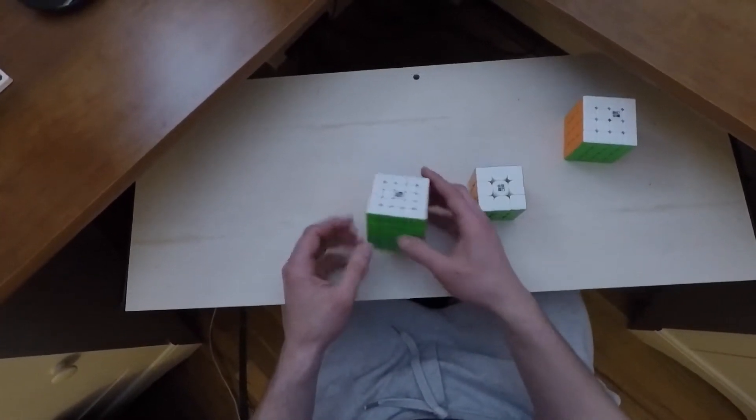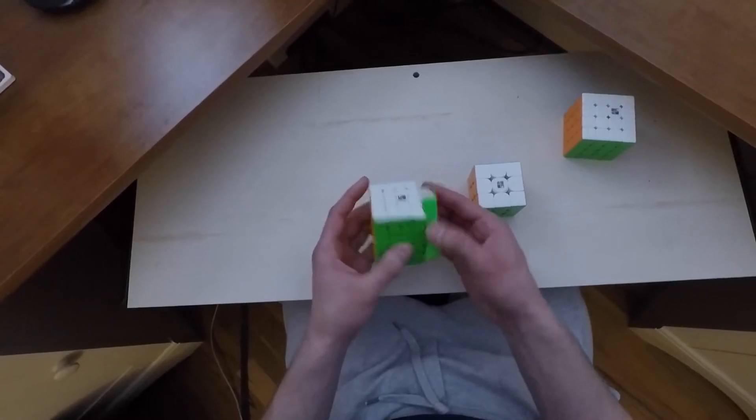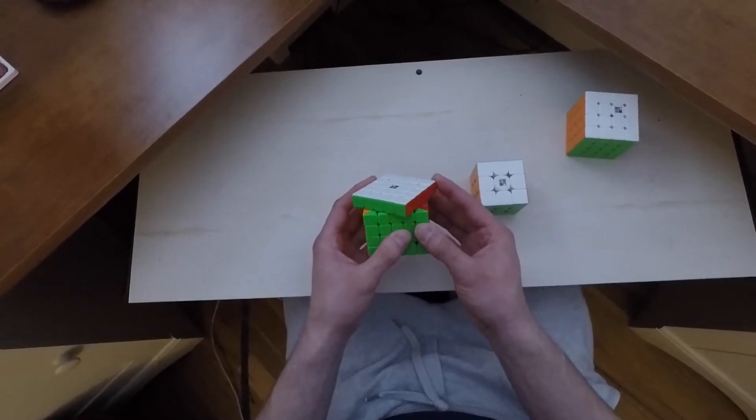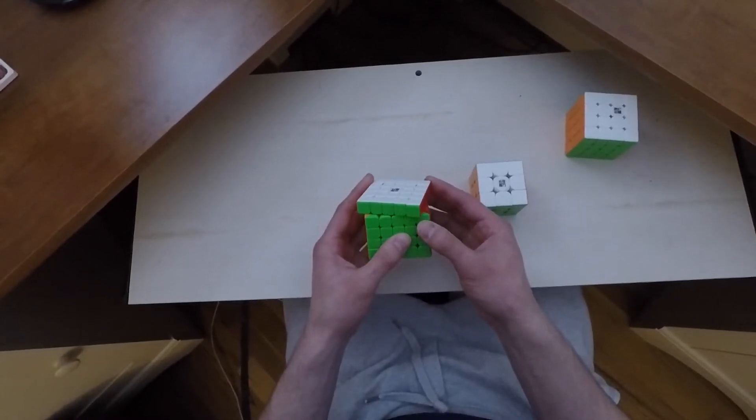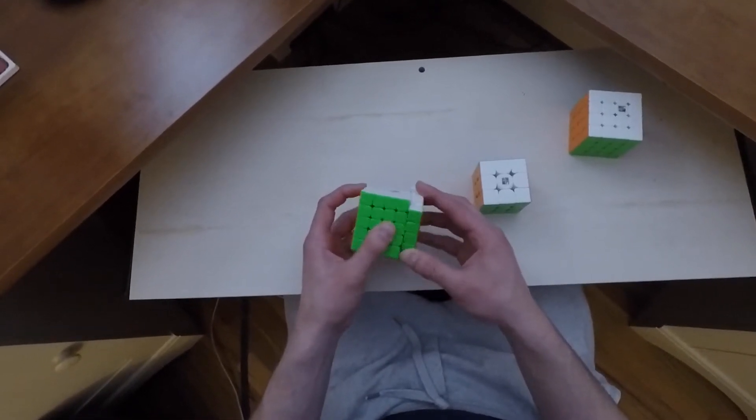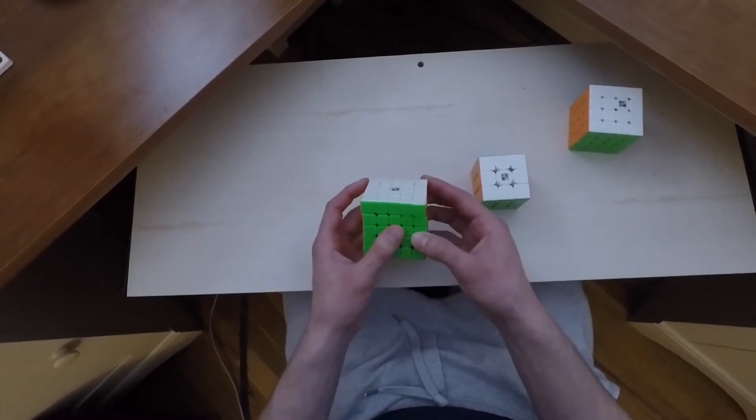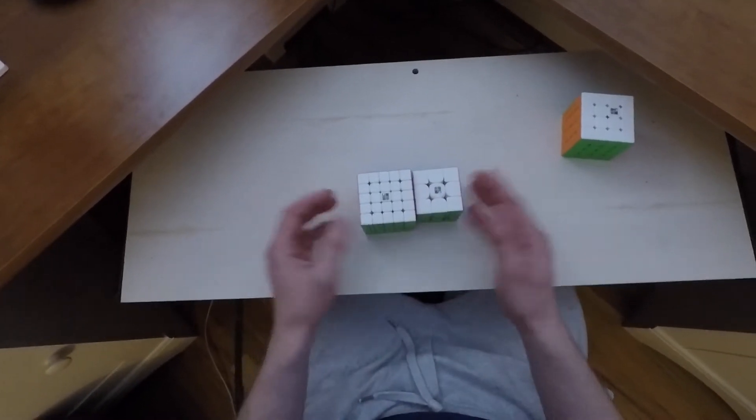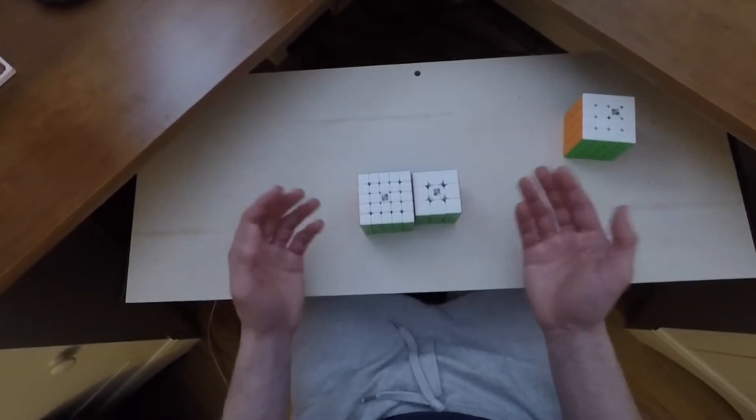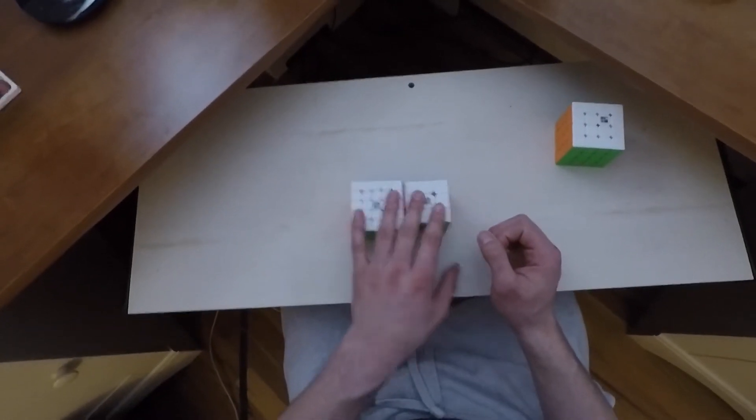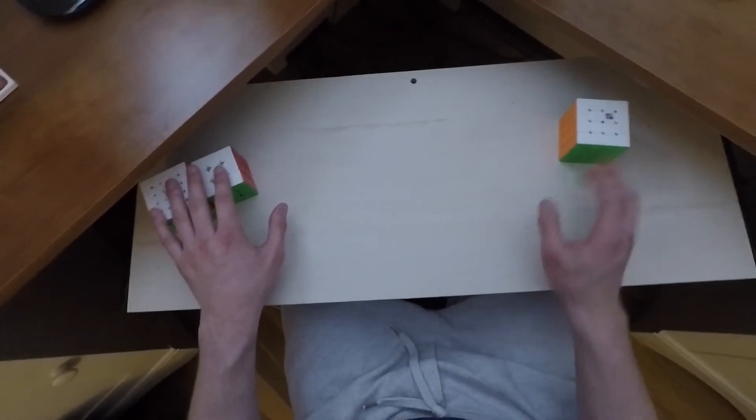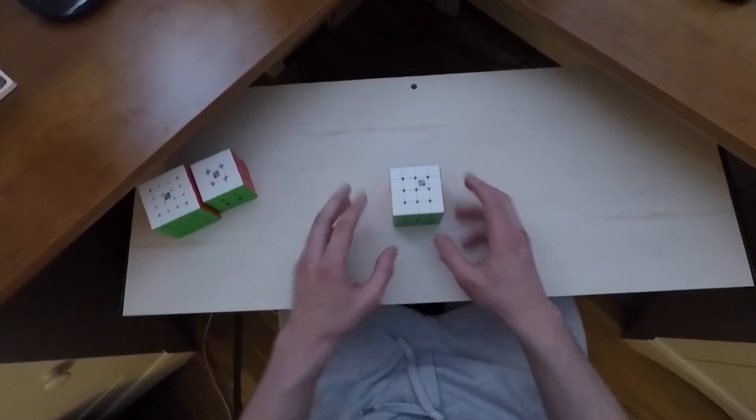For the 5x5, again I'm not getting anything crazy but nothing bad by any means. Reverse corner cutting could use a little bit of work though. But like I said, not bad by any means, but I don't think they're anything super special. So now that we have those out of the way, now onto the 4x4.